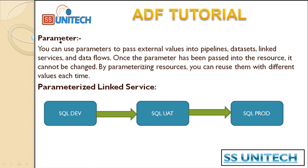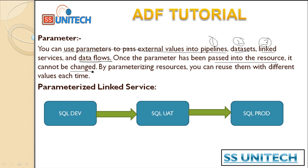You can use parameters to pass external values into pipelines, datasets, linked services, and data flows. For data flows, we have not discussed that yet and will cover it in upcoming videos. At the pipeline level, dataset level, and linked service level — on these three levels we can create parameters and use them. Once a parameter has been passed into a resource, it cannot be changed.